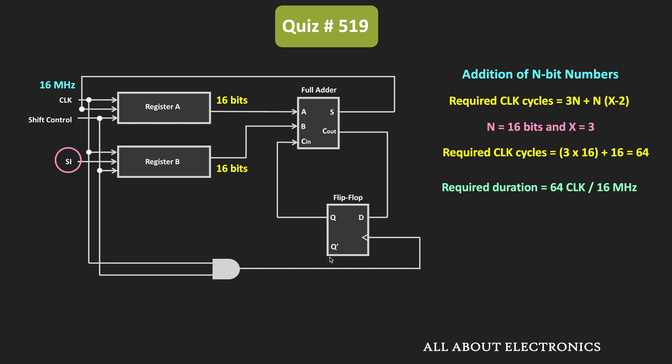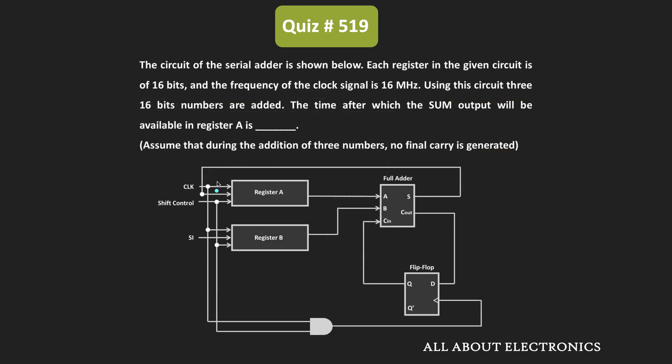The required duration equals 4 microseconds. That means after 4 microseconds, the sum output of the three numbers will be available in register A. Therefore, for the given question, the answer is 4 microseconds.